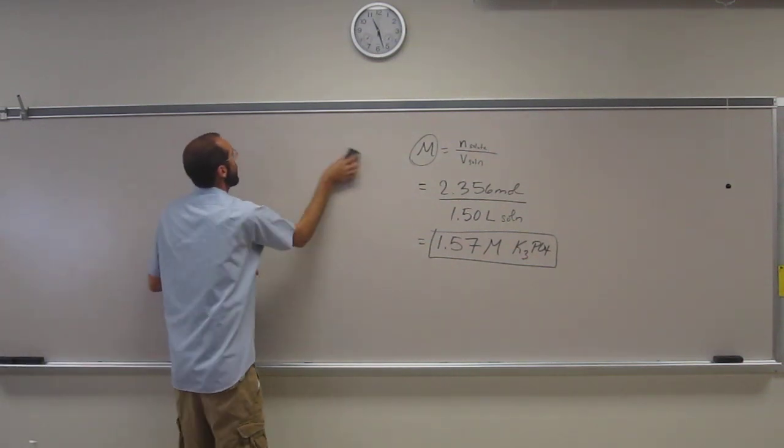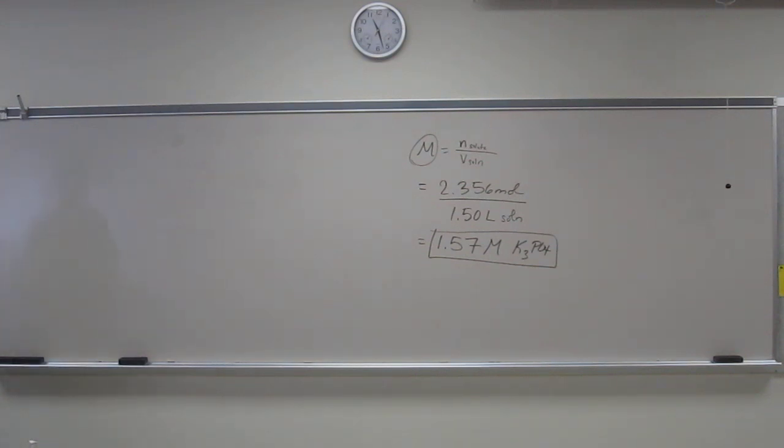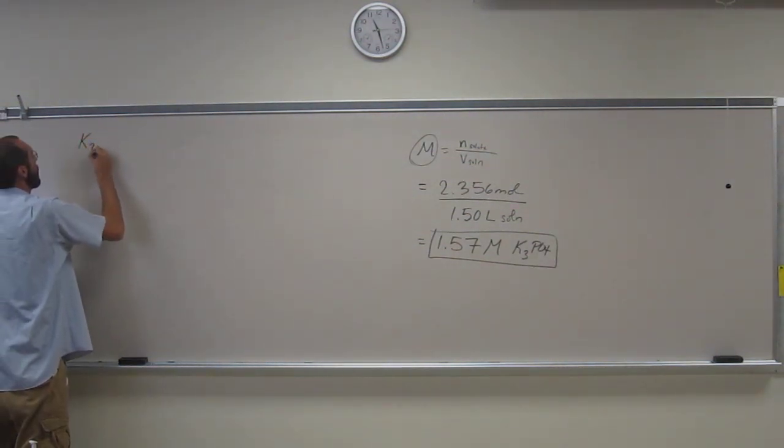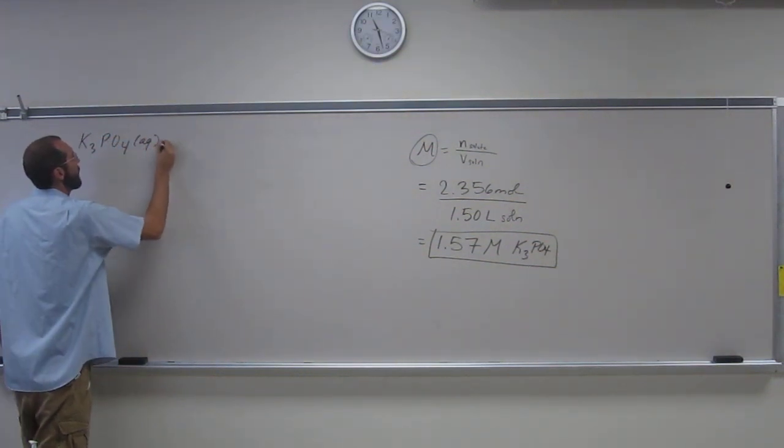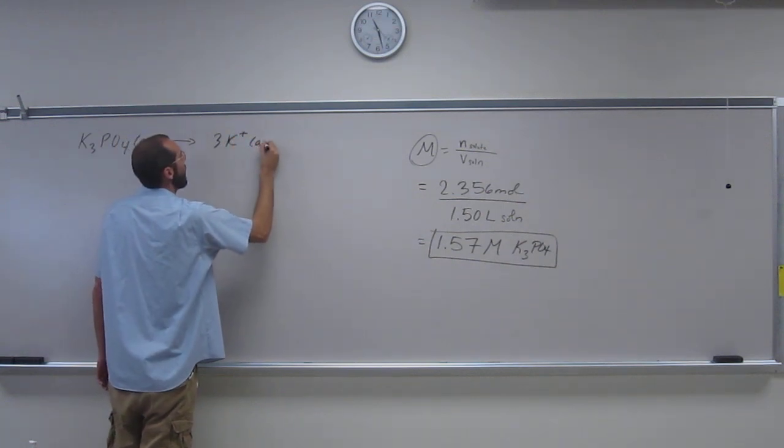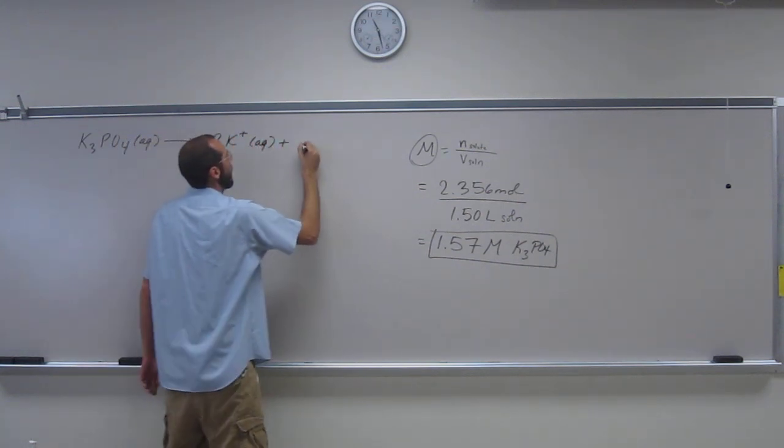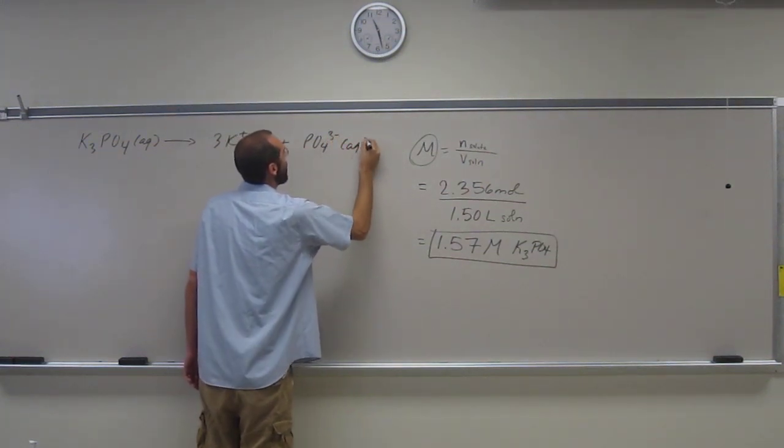So in order to do this problem, we're going to have to recall that both potassium and phosphate are both strong electrolytes. They'll dissociate completely in solution. So K3PO4, when you put it into solution, goes to 3K plus aqueous plus PO4 3 minus aqueous.